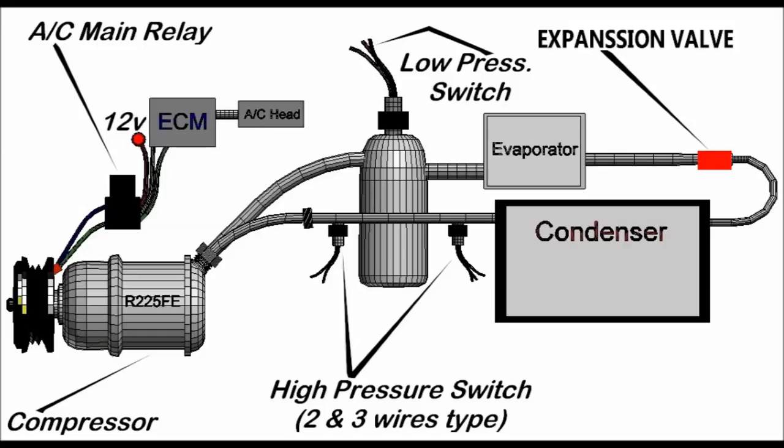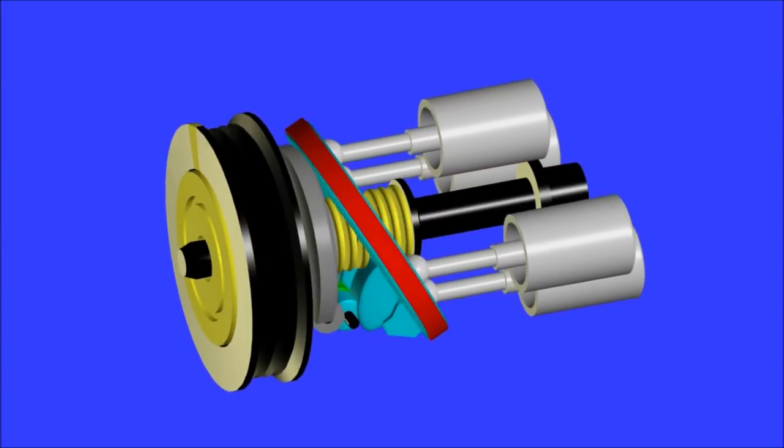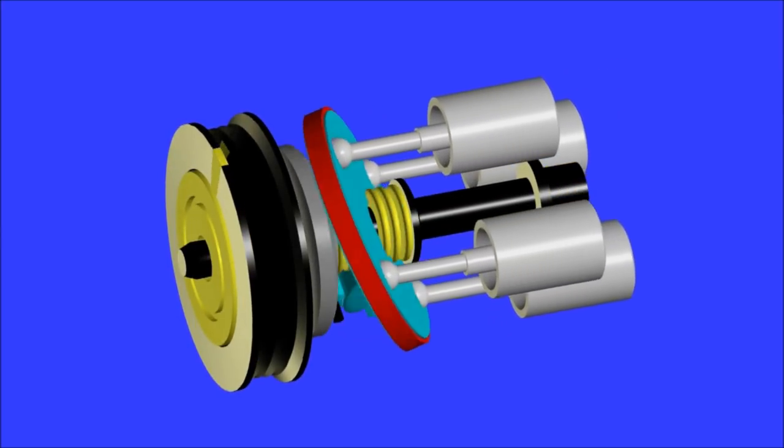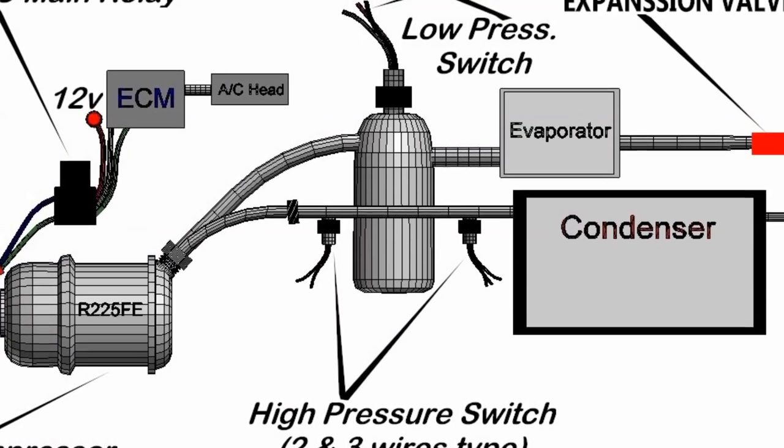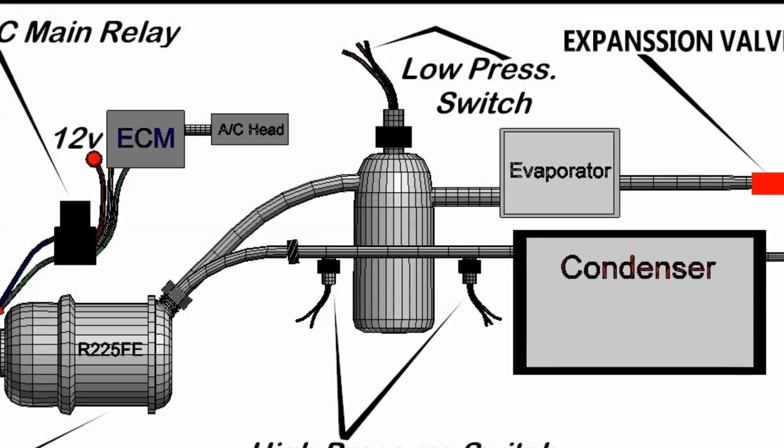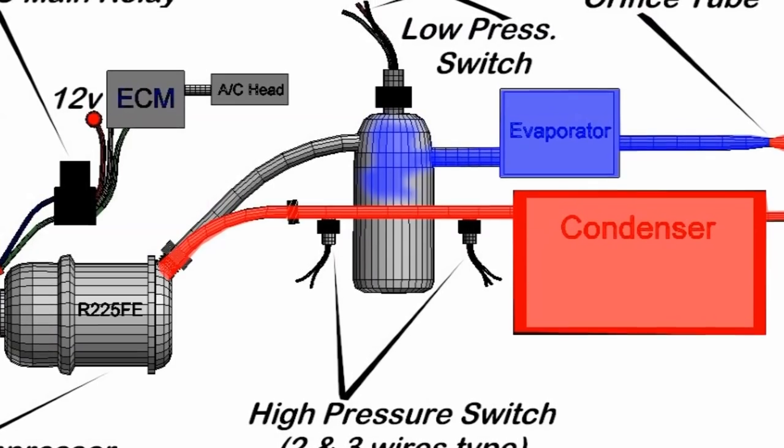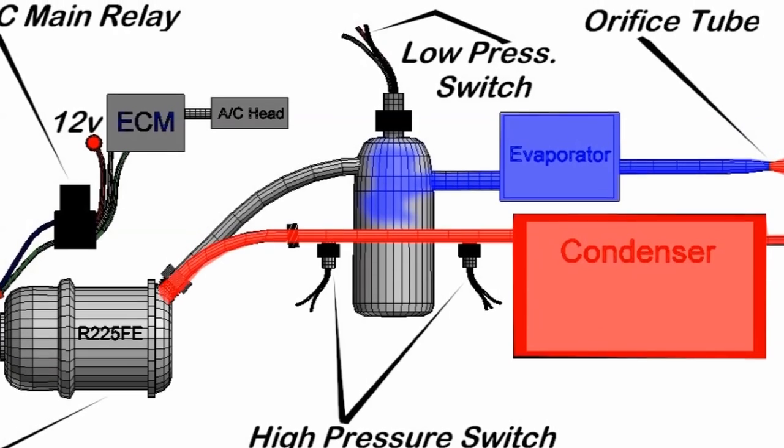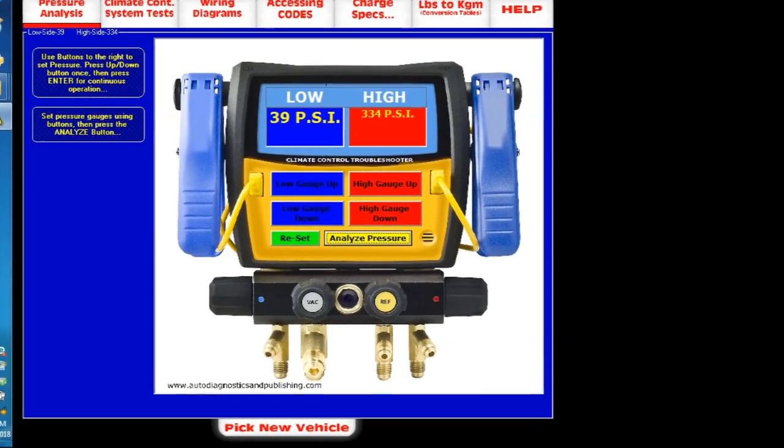The complexity comes in the controls, both in the compressor, and nowadays you have variable displacement compressors, which don't even have a clutch. Some of them don't even have a clutch. And in the expansion valve control. And of course, you have two pressure switches. You have low pressure switches and high pressure switches. The software has to know the low side of the system and the high pressure side of the system.